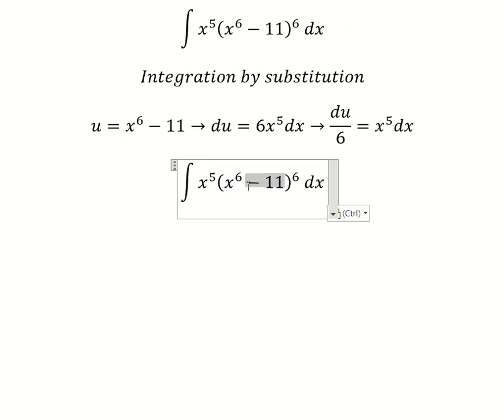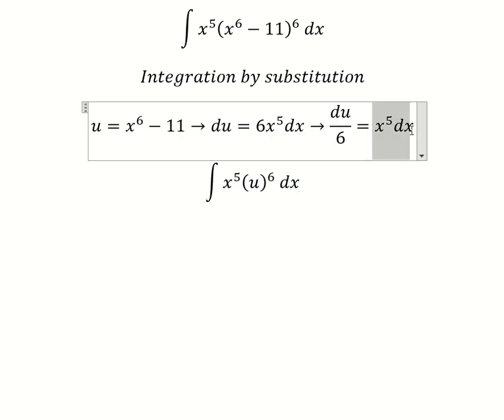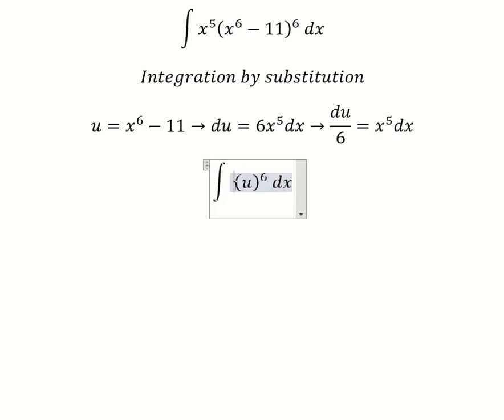So we change this for u, and we change this for du over 6. Now we have the formula: the integral of u to the n equals u to the n plus 1 over n plus 1 plus C.